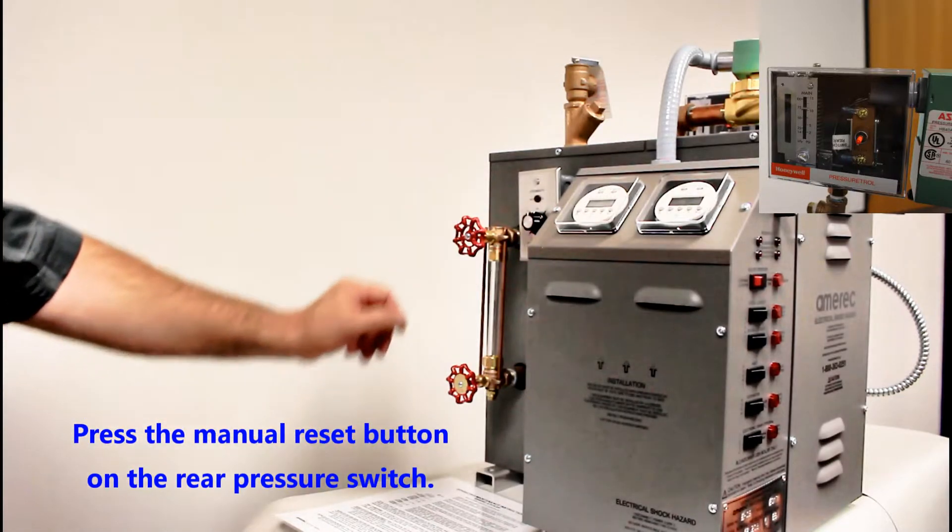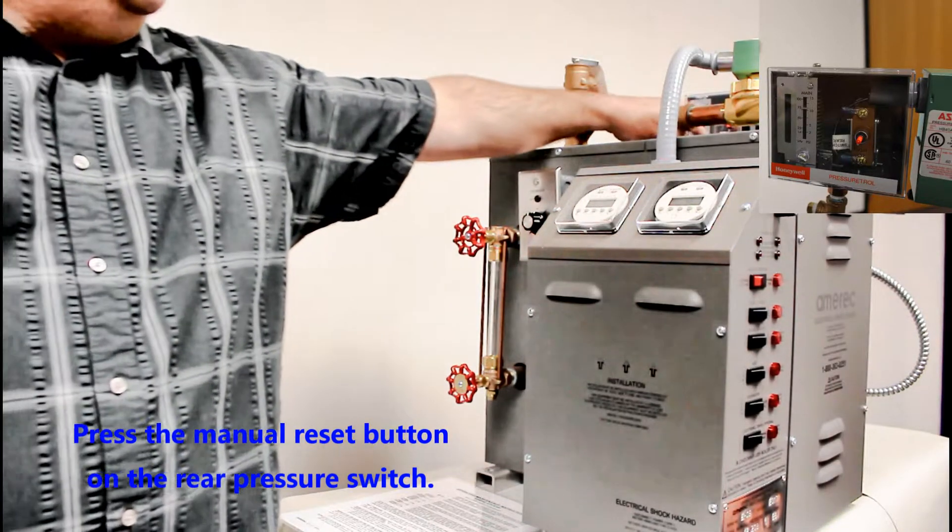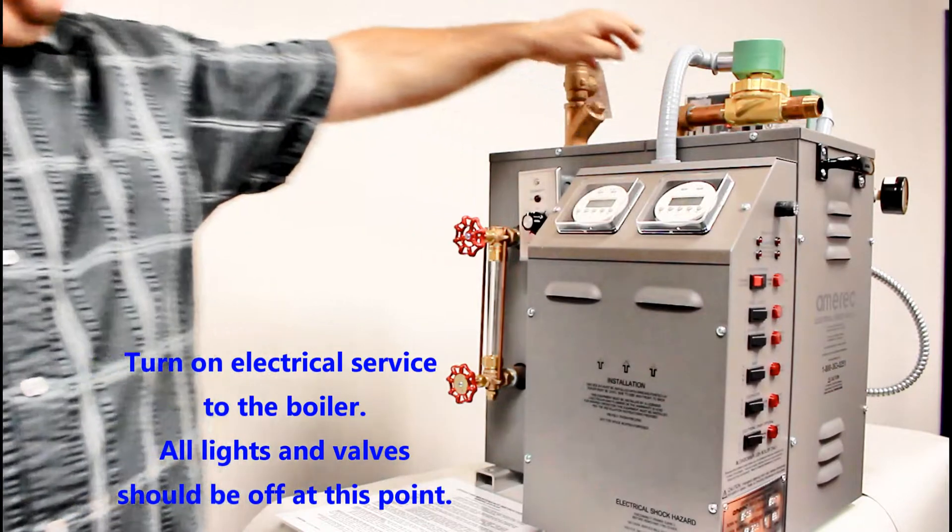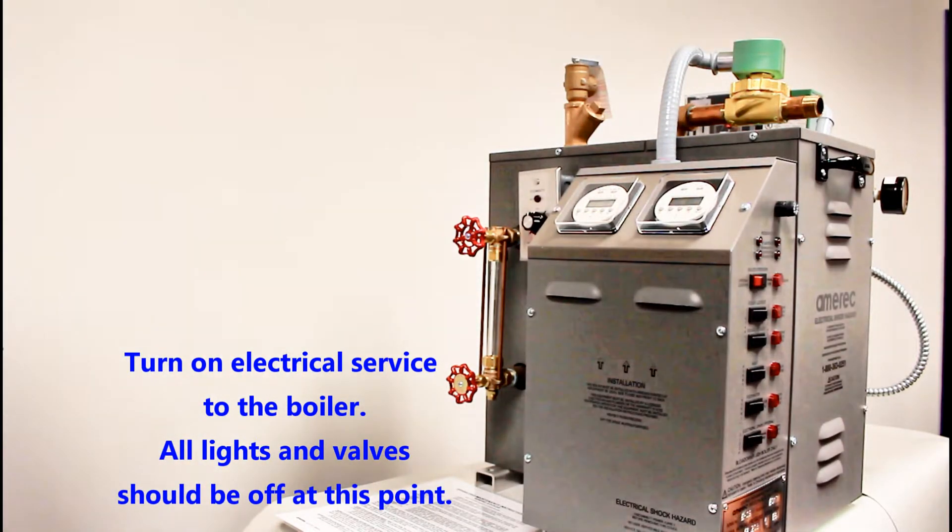Press the manual reset button on the rear pressure switch. Turn on the electrical service to the boiler. All lights and valves should be off at this point.